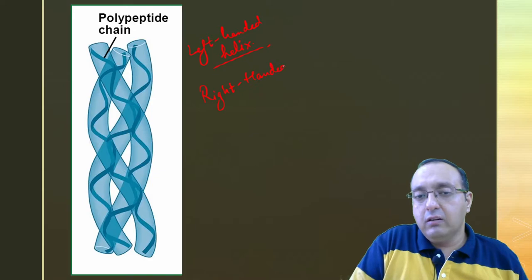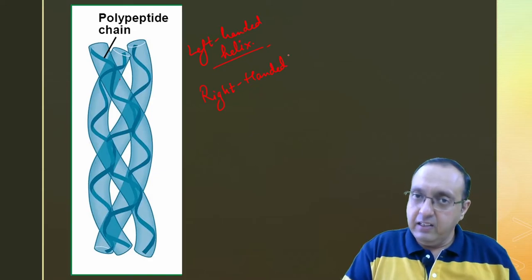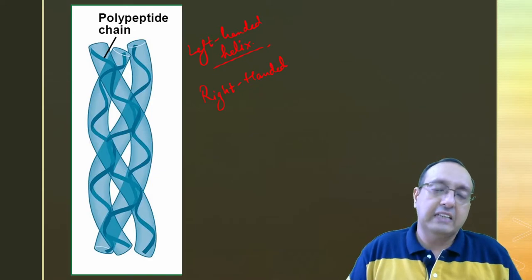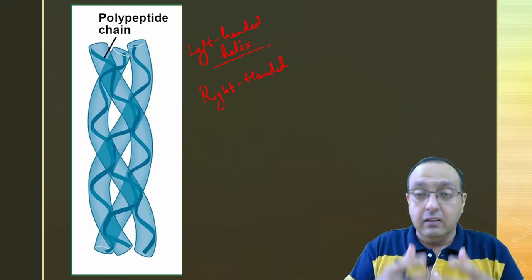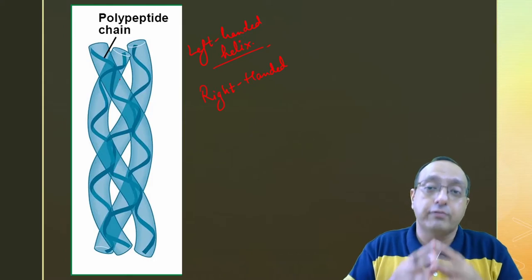So individual chains are left-handed, but the overall collagen helix is right-handed. Very important distinction to make. And that gives its structure a huge amount of tensile strength.